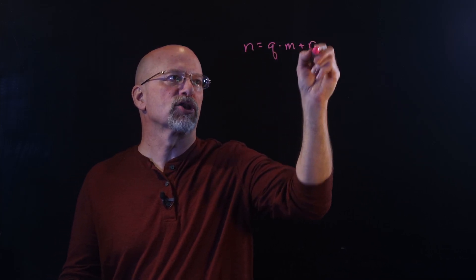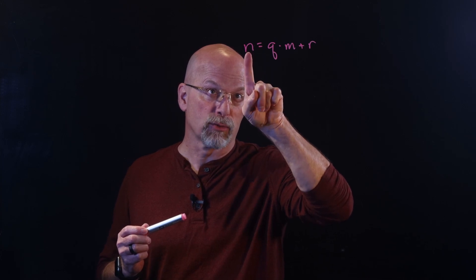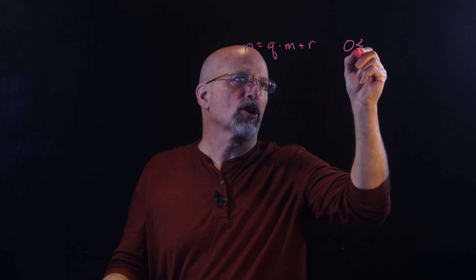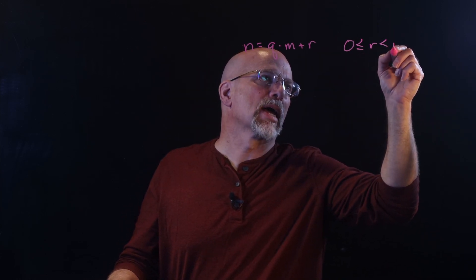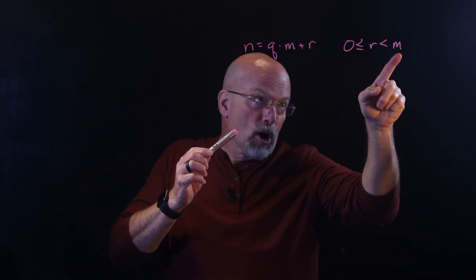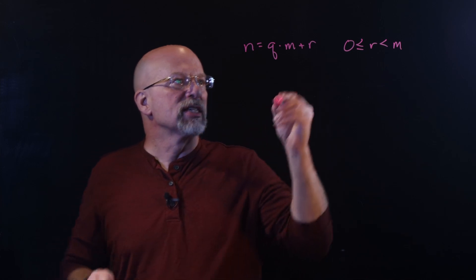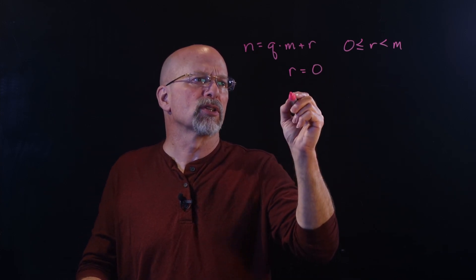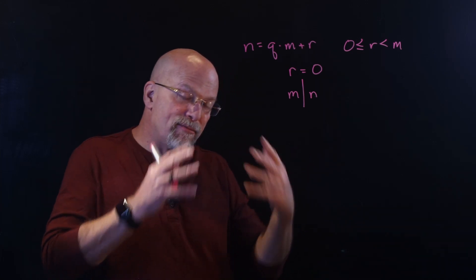In the previous lesson, we talked about this expression: n equals q times m plus r. If you have unique integer values for n and for m, then there's exactly one solution for q and r, where r is restricted to the range — greater than or equal to 0 and less than m. If r is equal to 0, that's a special case meaning m divides n.